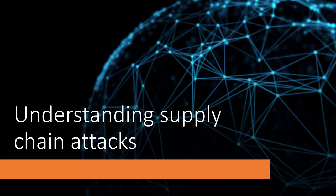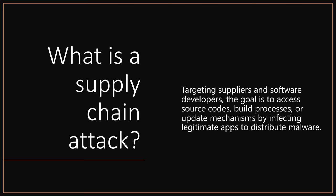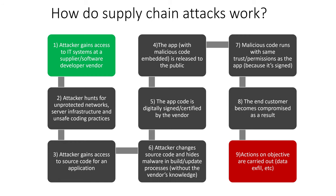Before we jump in, we first need to understand what a supply chain attack is. Targeting suppliers and software developers, the goal is to access source codes, build processes, or update mechanisms by infecting legitimate applications to distribute malware. How do supply chain attacks work? It starts with the attacker gaining access to IT systems at a supplier or software developer vendor. Next, the attacker hunts for unprotected networks, server infrastructure, and unsafe coding practices, then gains access to source code. The app with malicious code embedded is then released through normal means and digitally signed by that vendor, making it extremely difficult to detect because it appears to be legitimate.